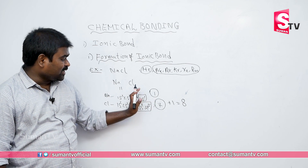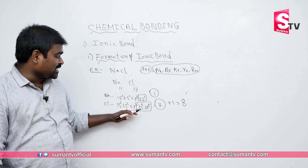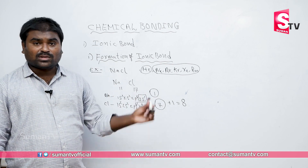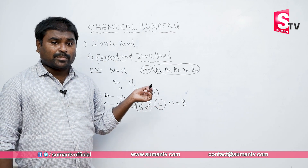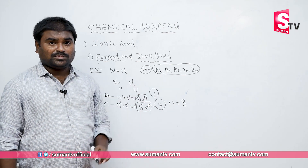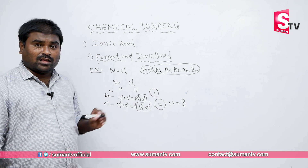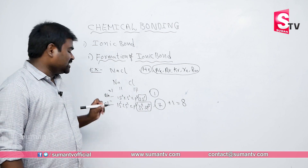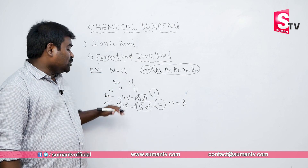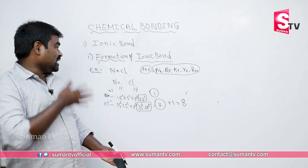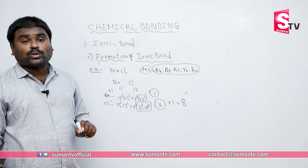After sodium loses its 3s1 electron, both sodium and chlorine now have the configuration 2s2, 2p6 — the octet is fulfilled. Sodium, having lost an electron, becomes positive (Na+). Chlorine, having gained an electron, becomes negative (Cl-). The electron transfers from sodium to chlorine — this is the formation of the ionic bond in sodium chloride.